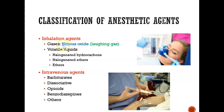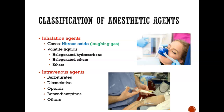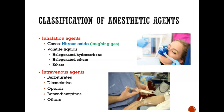When we inhale something, the one we are most familiar with is nitrous oxide. If something were to be injected intravenously, the types of medications that could be injected are opioids, barbiturates, and benzodiazepines.